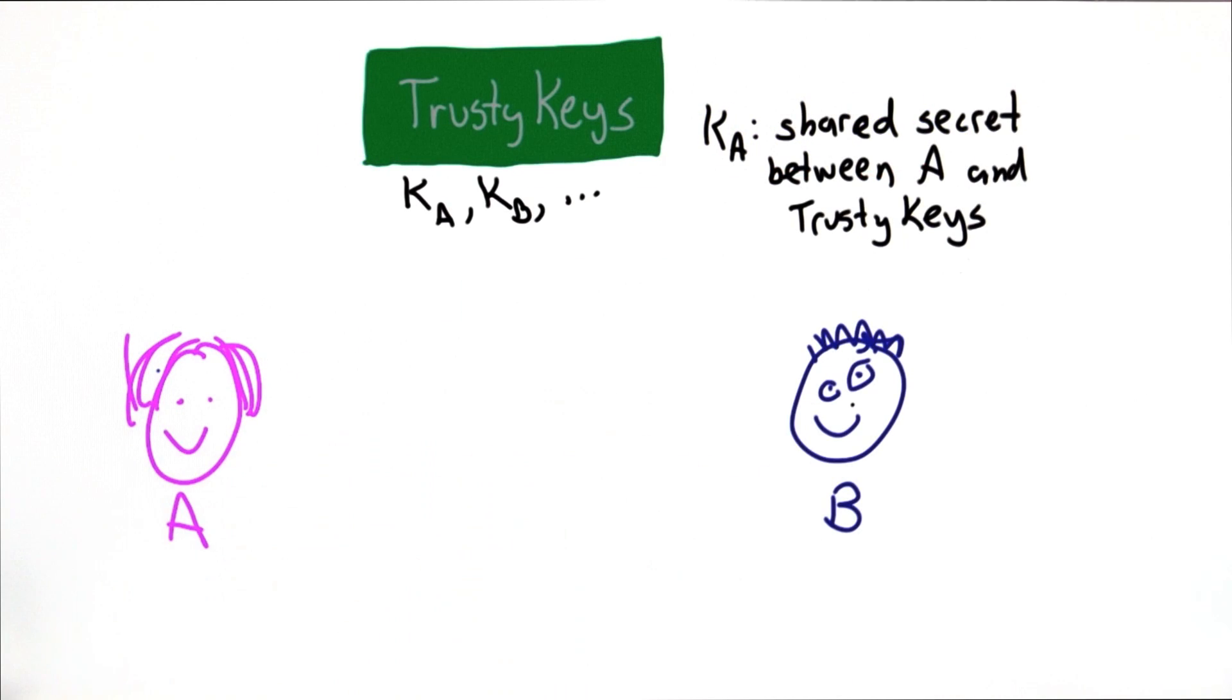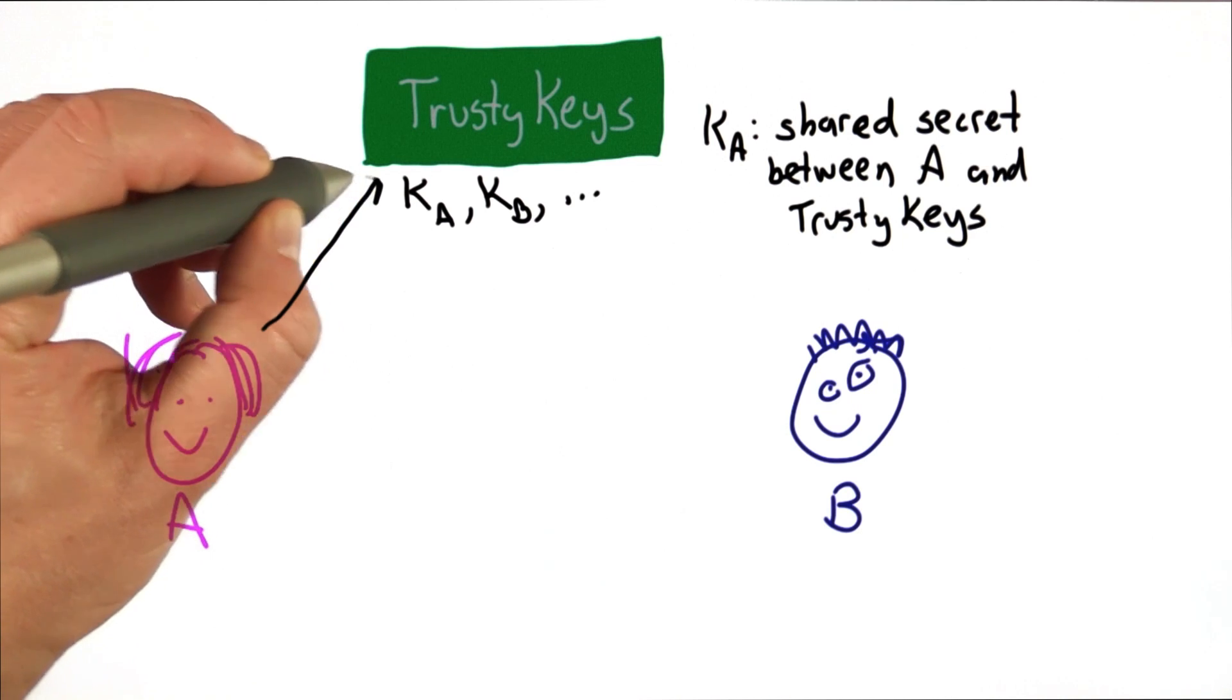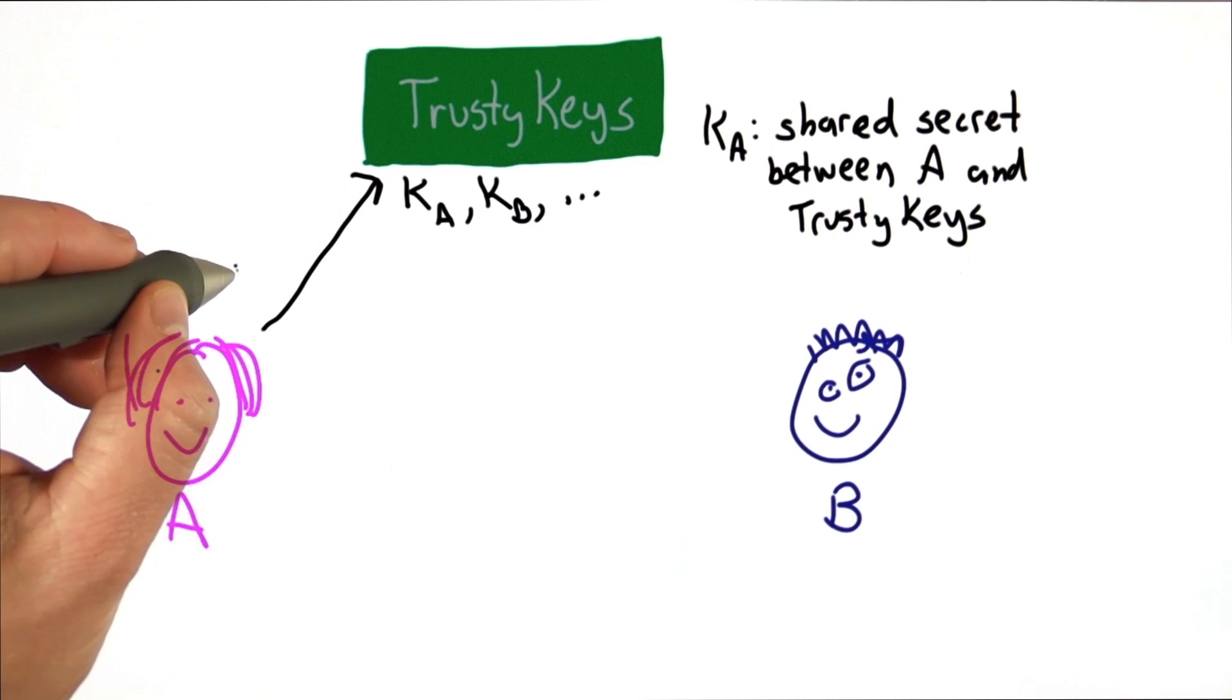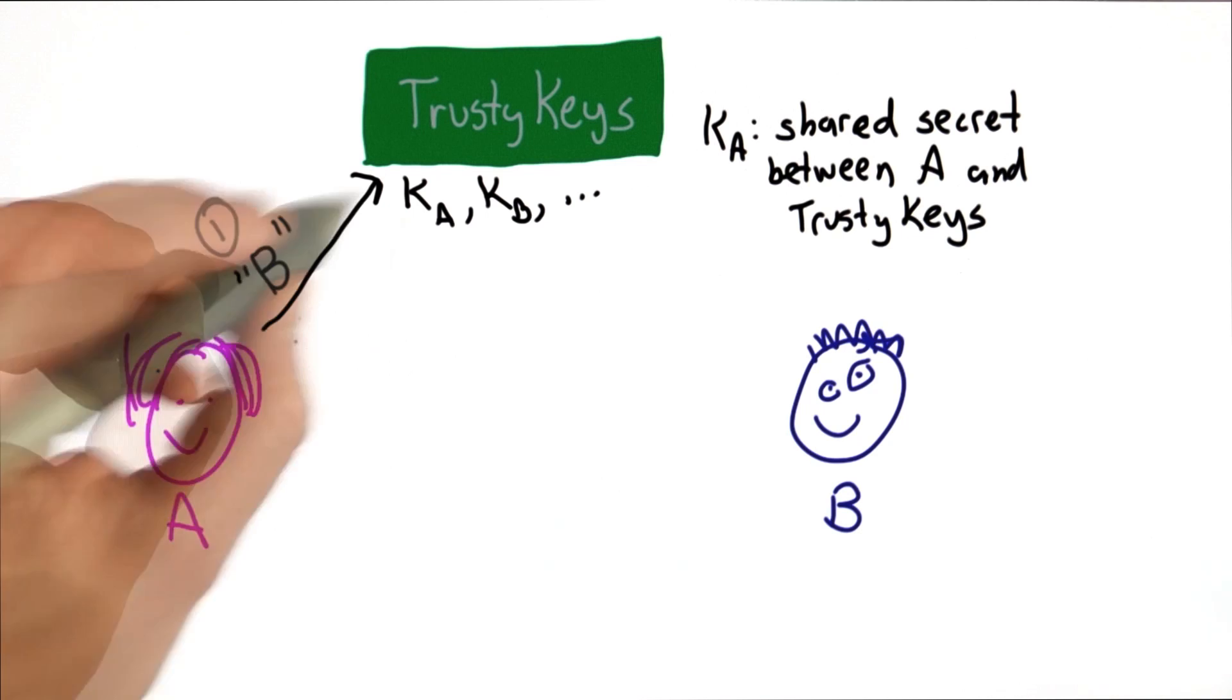Now, if Alice and Bob want to communicate, the protocol is Alice sends a message to TrustyKeys that says she wants to communicate with Bob. So that's step 1 of the protocol.